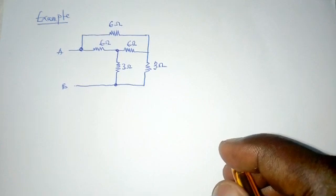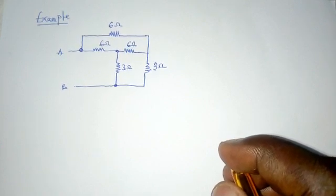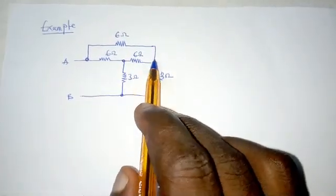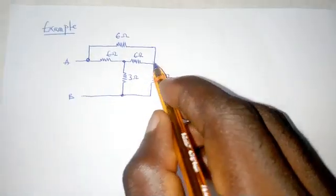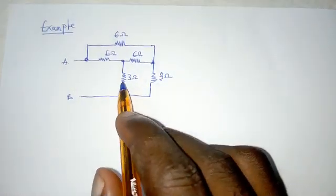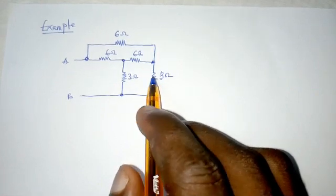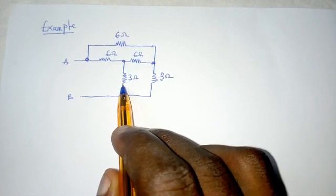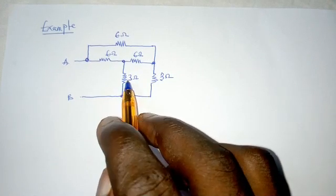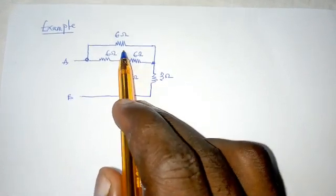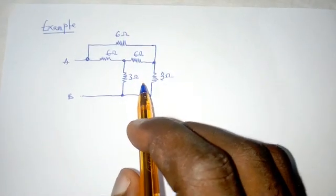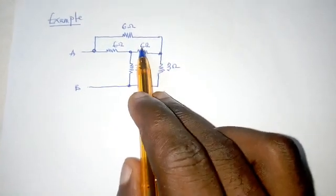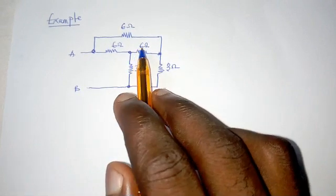Once we do the conversion, some series or parallel combination will emerge and help us find the effective resistance. We can see that the three 6-ohm resistors — one, two, and three — are delta connected because they are connected end to end. Also, the two 6-ohm and one 3-ohm resistors are connected in star. In this example, I'm going to change the three 6-ohm resistors which are in delta to star.